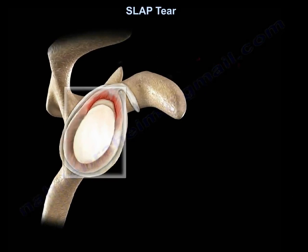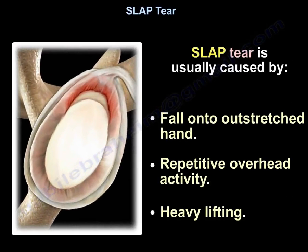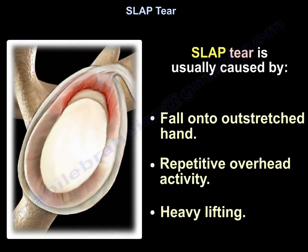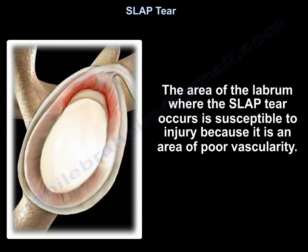SLAP tears are usually caused by a fall onto the outstretched hand, repetitive overhead activity, and heavy lifting. The area of the labrum where the SLAP tear occurs is susceptible to injury because it is an area of poor vascularity.